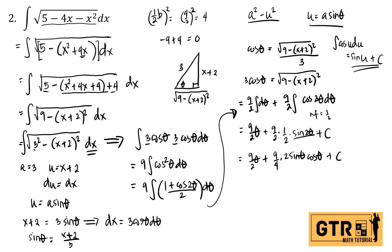Now let's substitute back the values of theta, sine theta, and cosine theta. Since sine theta equals (x plus 2) over 3, the value of theta is arc sine of (x plus 2) over 3. So we have 9 over 2 times arc sine of (x plus 2) over 3, plus 9 over 4 times sine 2theta. Using the identity sine 2theta equals 2 sine theta cosine theta, and 9 over 4 times 2 simplifies to 9 over 2.